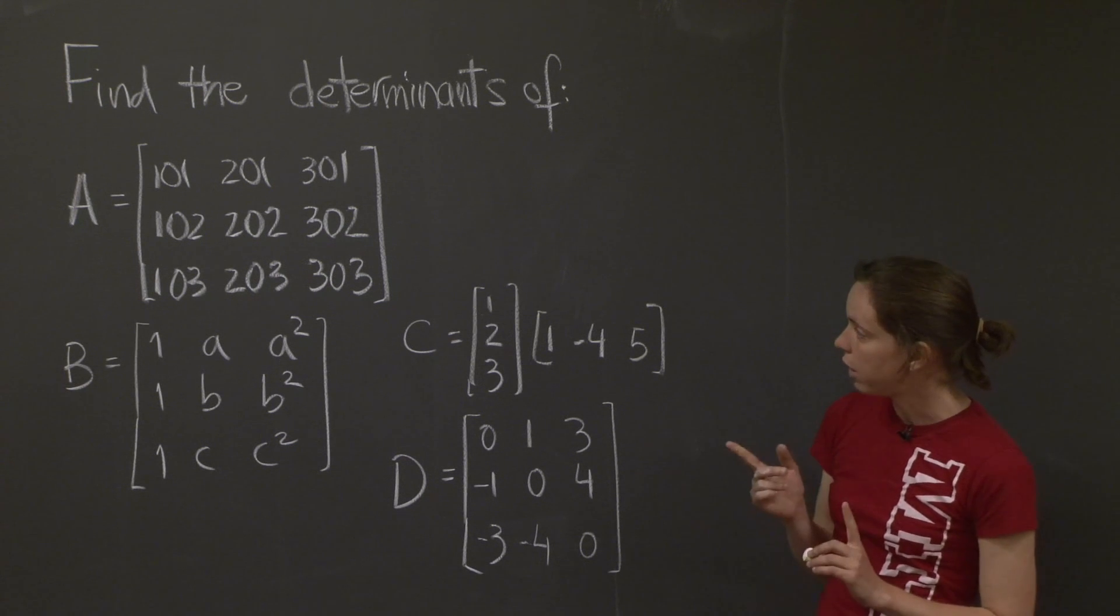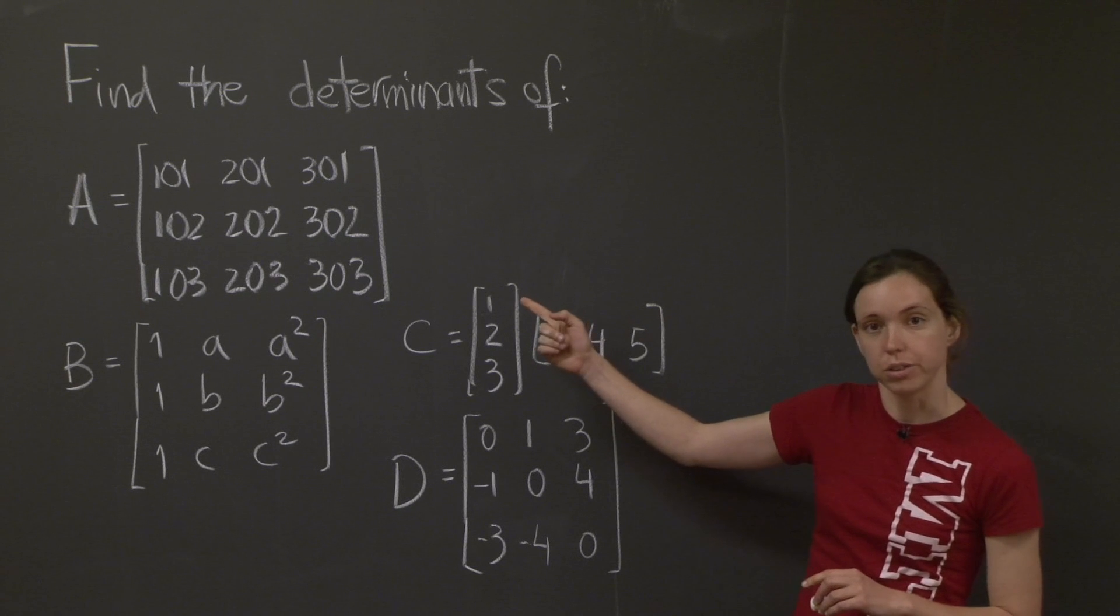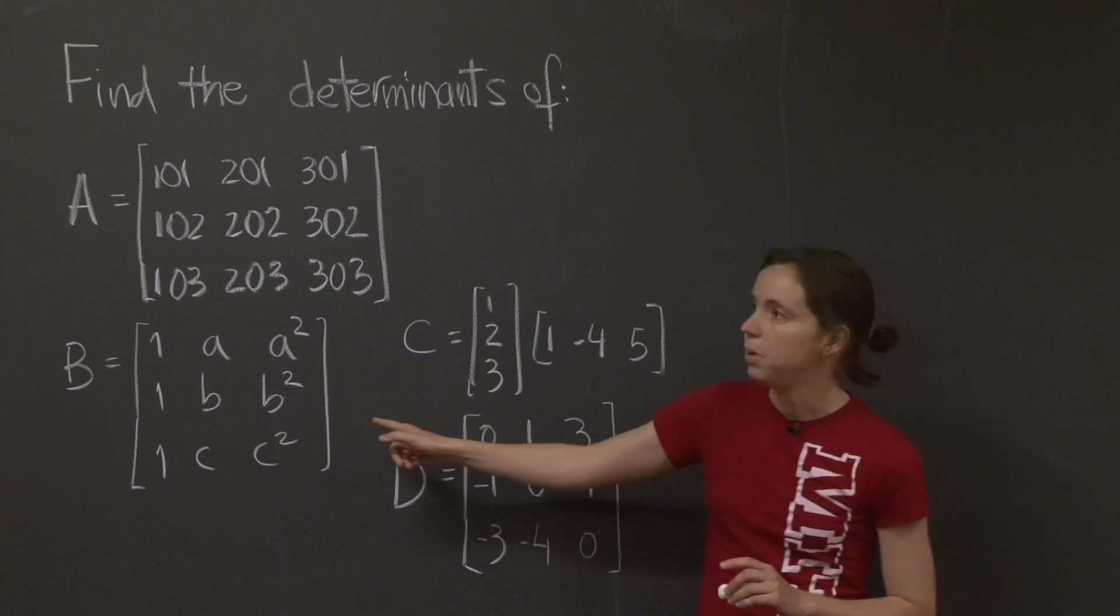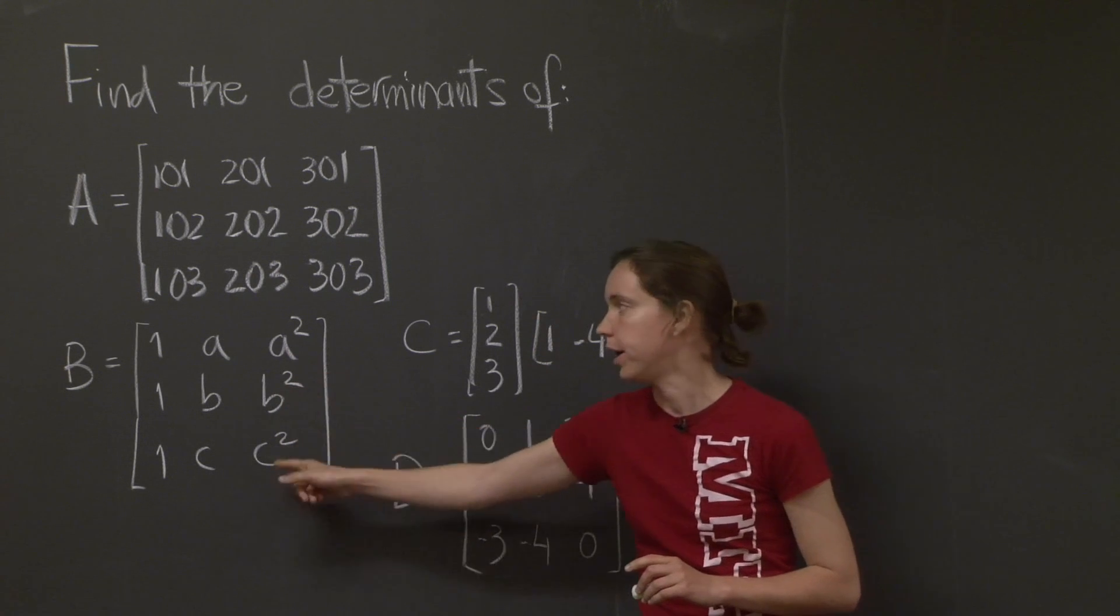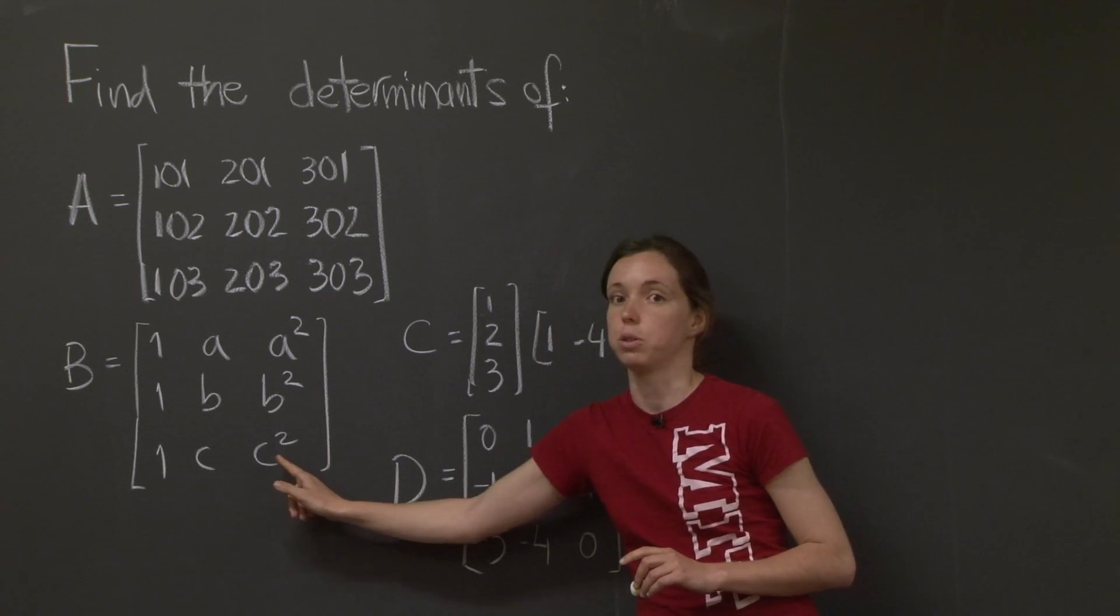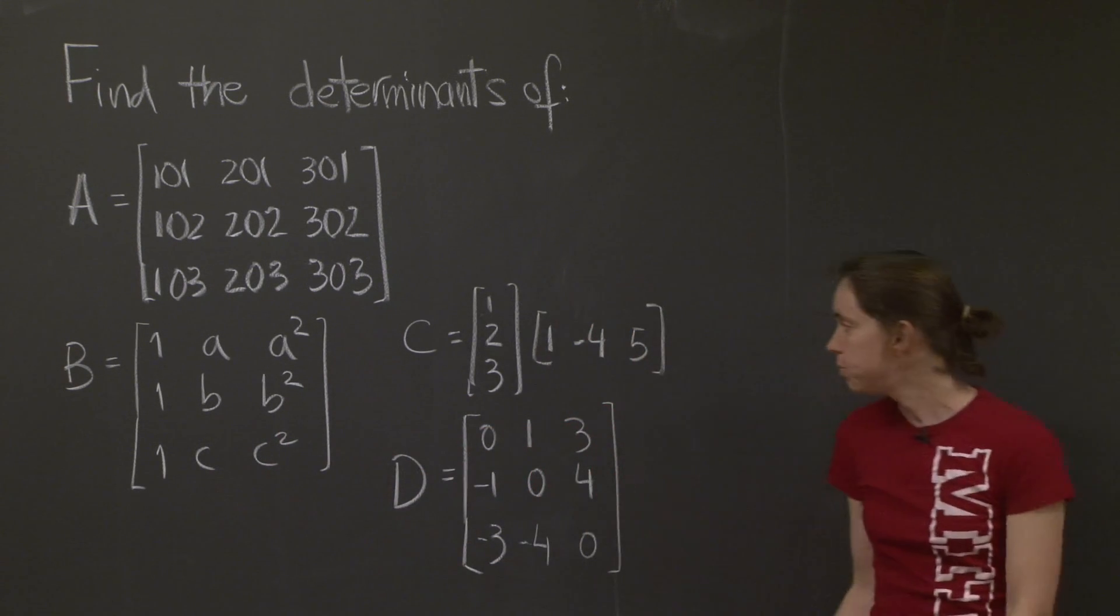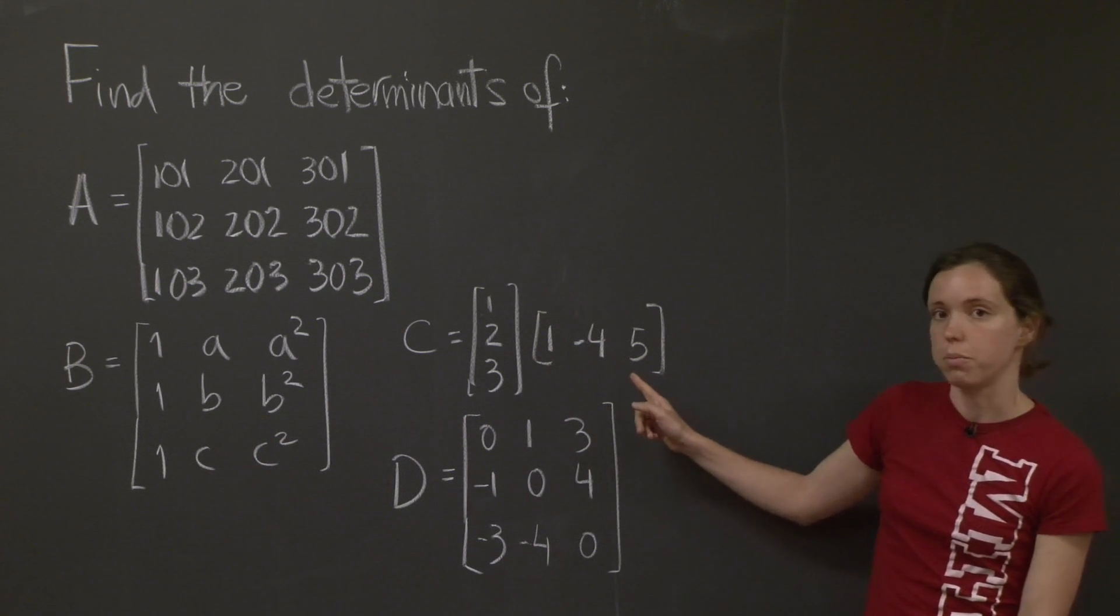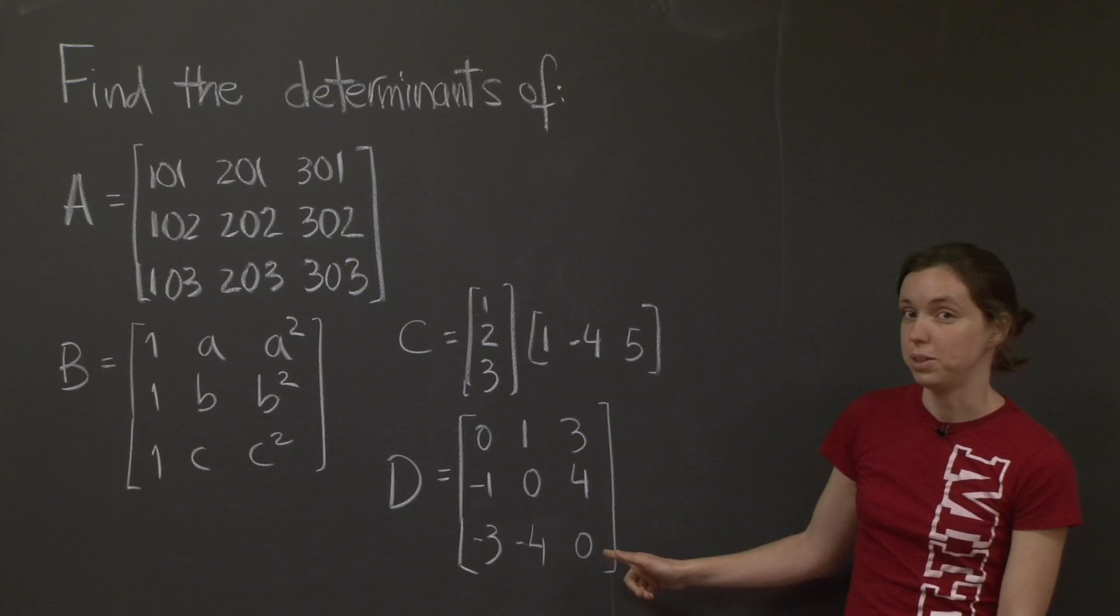Today's problem is about finding the determinants of matrices by using these properties. So here you have four matrices. A has lots of 100s, 200s, and 300s numbers. B is called a Vandermonde matrix. It has a very nice structure with 1s, and then A, B, C, A squared, B squared, C squared, and can be bigger.